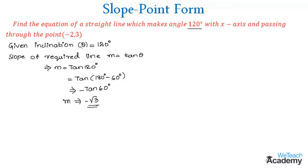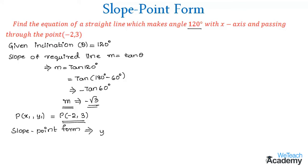Given that this line passes through the point (-2, 3), we equate (x1, y1) with (-2, 3). Since we have the slope as well as a point, we can use slope-point form to find the equation: y minus y1 is equal to m into x minus x1. That gives us y minus 3 is equal to minus root 3 into x minus (-2).